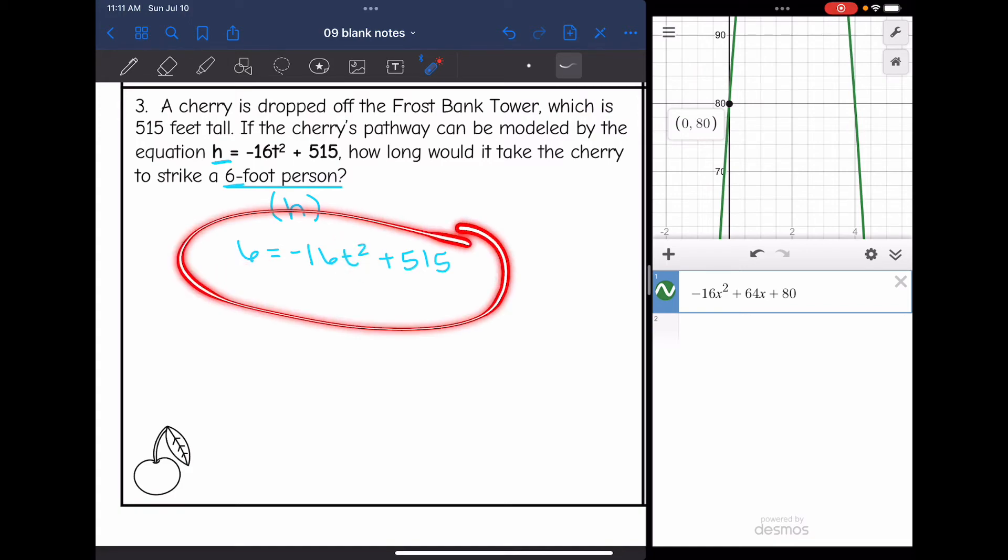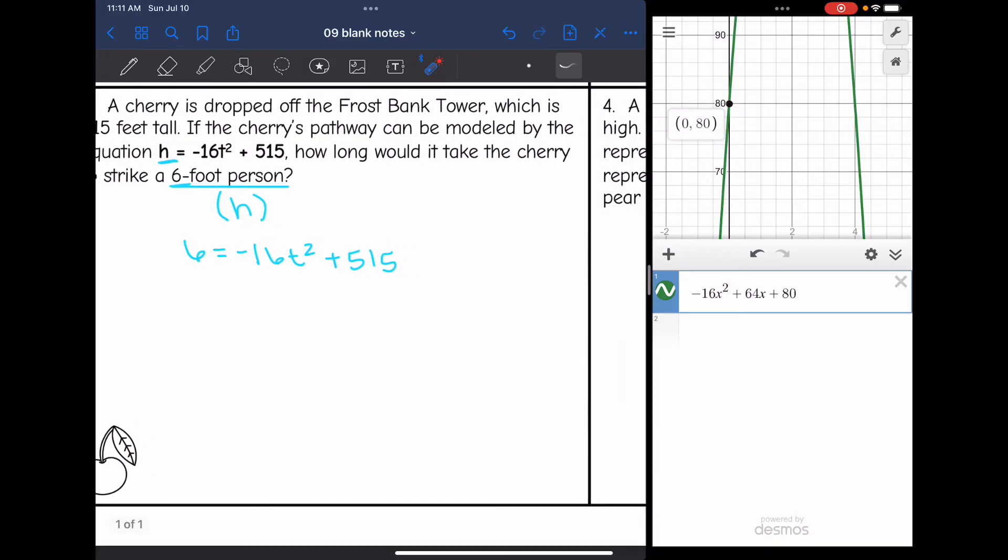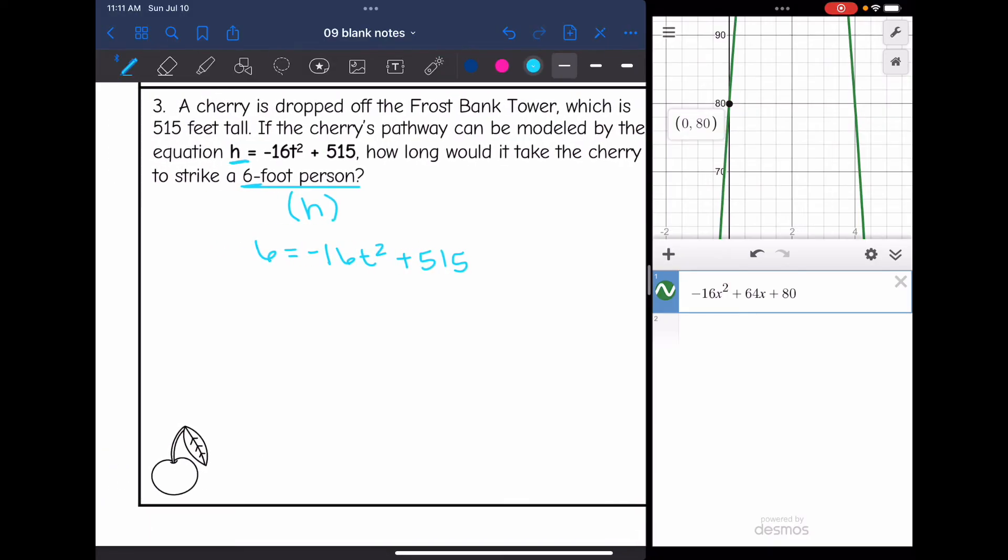This equation would be pretty easy to solve with the square roots method. But I don't have the scientific calculator pulled up. I have the graphing calculator pulled up. So I'm going to solve it that way. I am trying to find the solutions or the zeros to this equation. I'll be looking at the positive x-intercept.